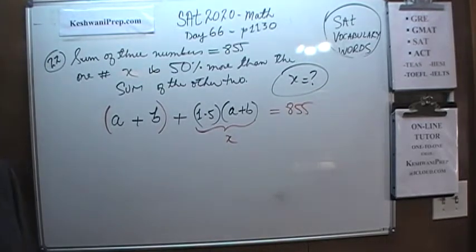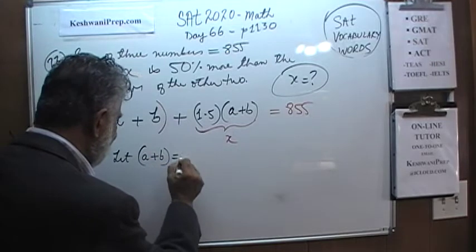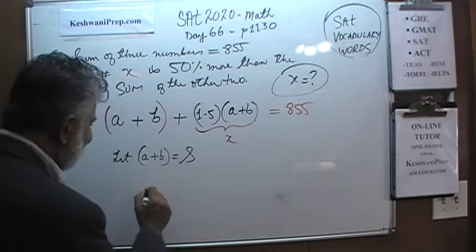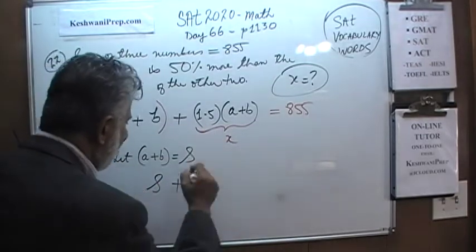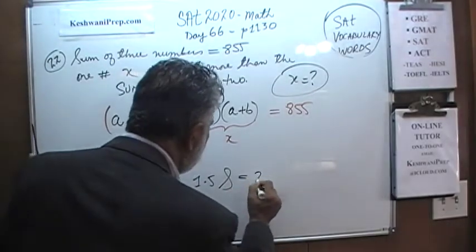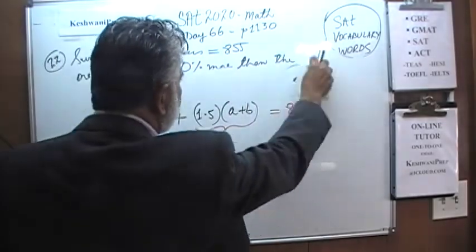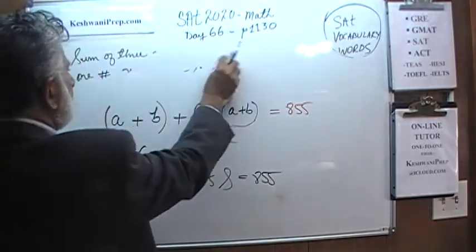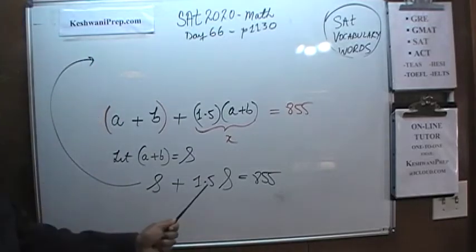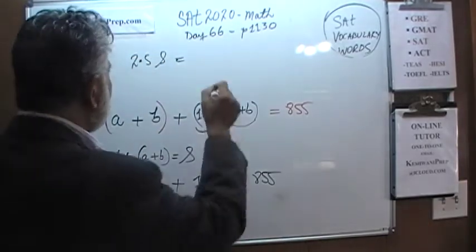We'll solve by substitution. Let A + B equal S. Then we have S + 1.5S = 855, which equals 2.5S = 855.